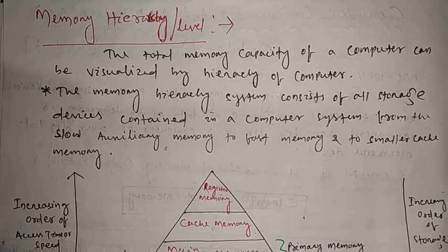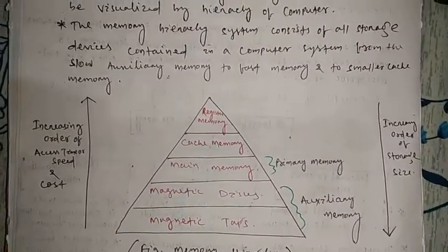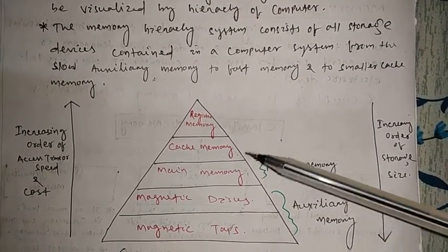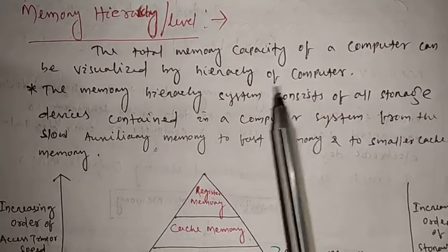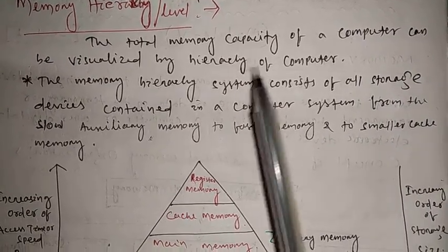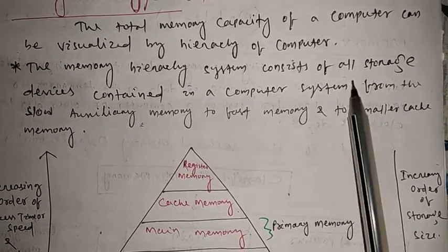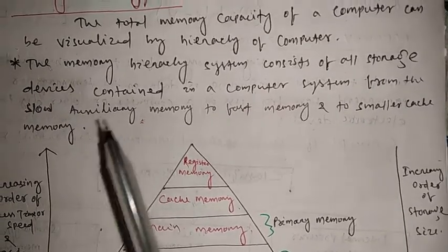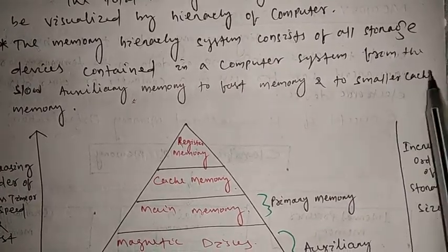Next, come to memory hierarchy. What do we mean by memory hierarchy? It is the arrangement of memory, or giving levels to the memory — that is called memory hierarchy. The total memory capacity of a computer can be visualized by the hierarchy of a computer. The memory hierarchy system consists of all storage devices contained in a computer system, from slower auxiliary memory to faster memory to smaller cache memory.